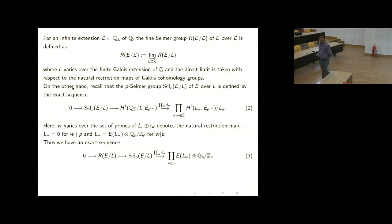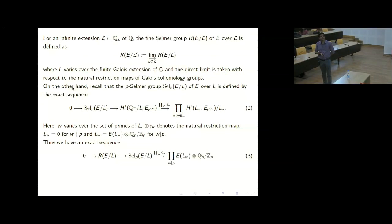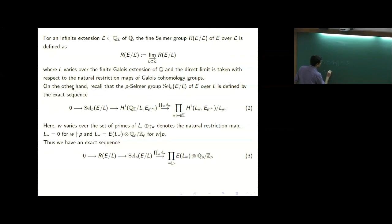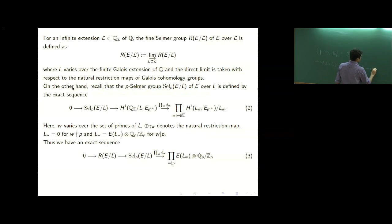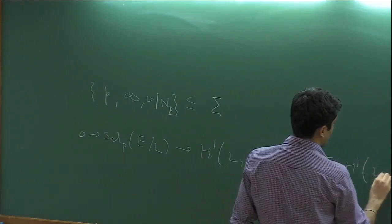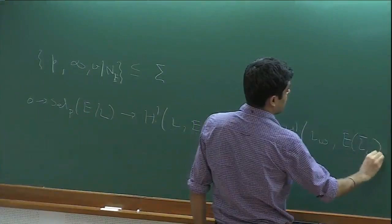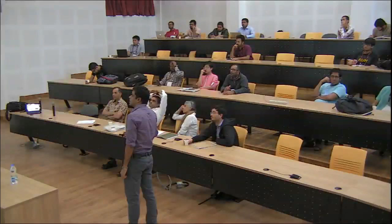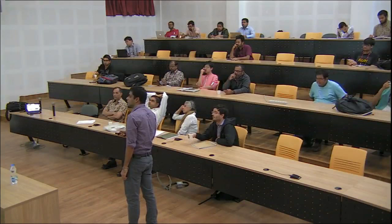We also have the usual Selmer group defined using this exact sequence — we are interested only in the P-primary part of the Selmer group. This is not the usual definition of the Selmer group; it's slightly different. The usual definition involves H^1(L, E[P^∞]) and a product of H^1(L_W, Ê). It can be shown that both are equivalent, because on primes of good reduction, Tamagawa numbers are trivial. We will use this definition as calculations are much easier.